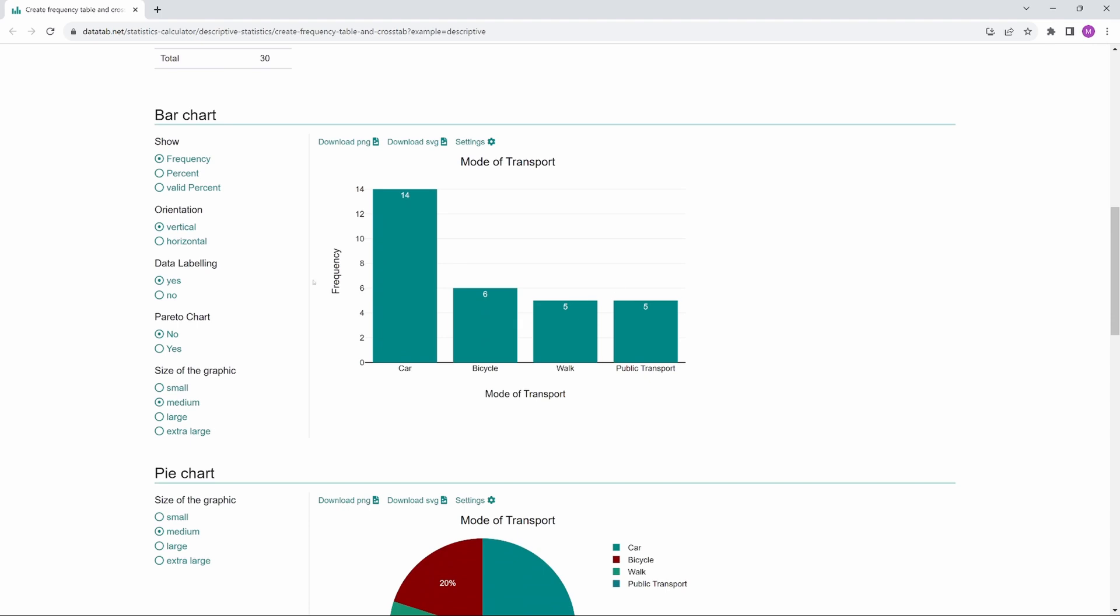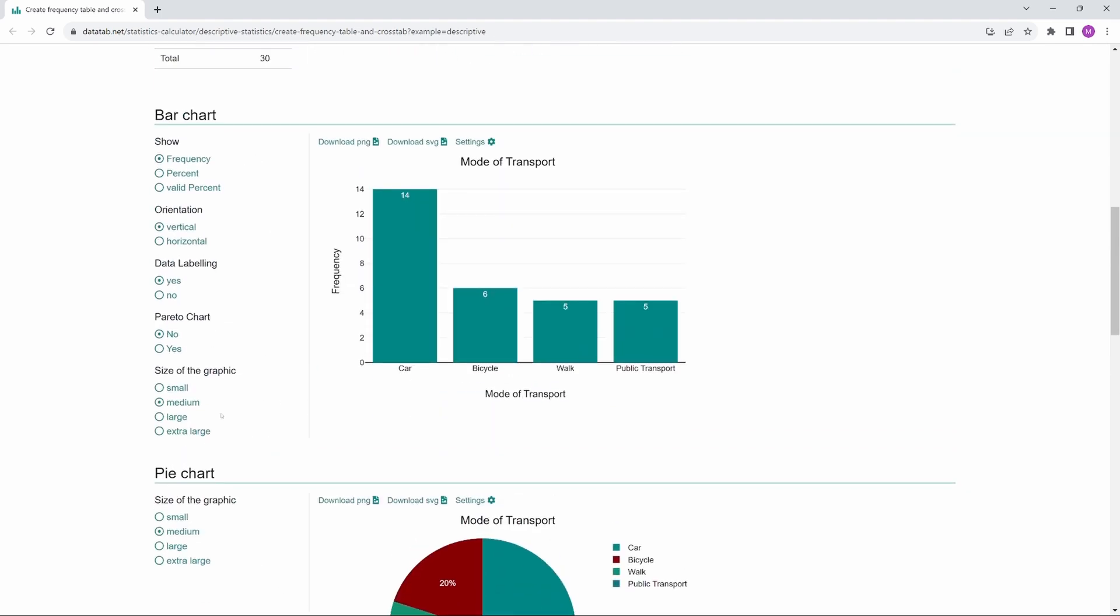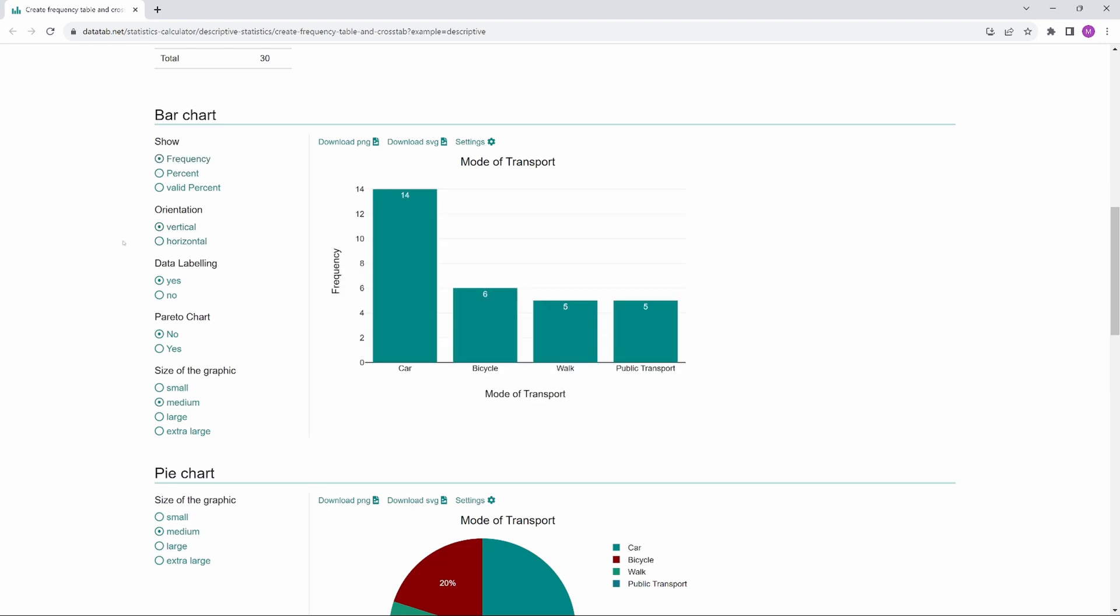If we scroll down, we get a bar chart and a pie chart. Here on the left, we can adjust the settings. For example, we can specify whether we want to display the frequencies or the percentage values or whether the bars should be vertical or horizontal.